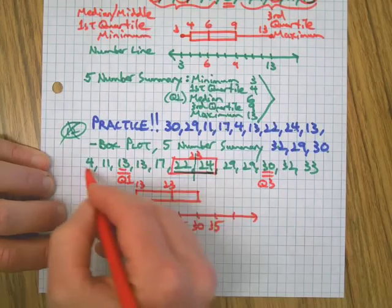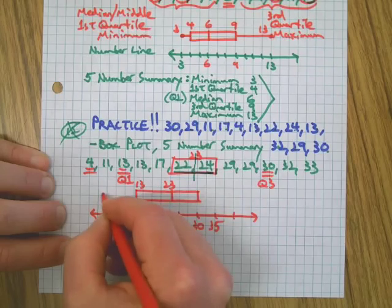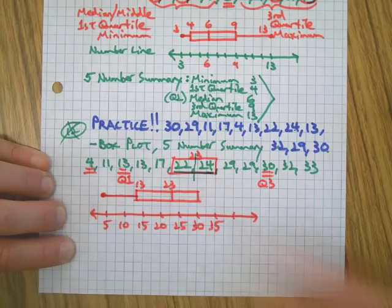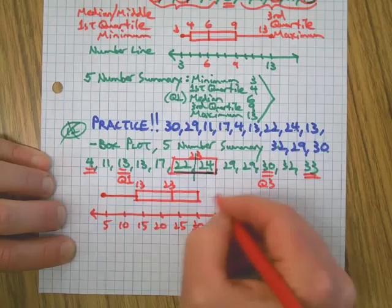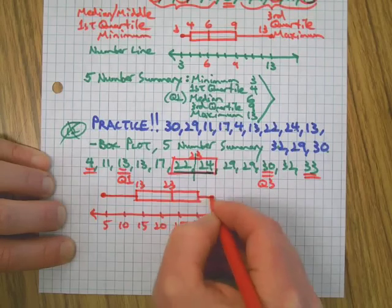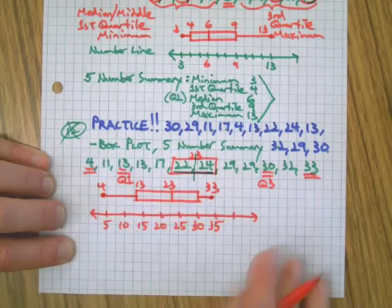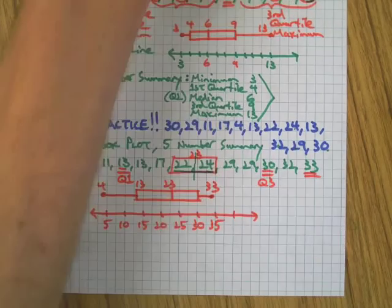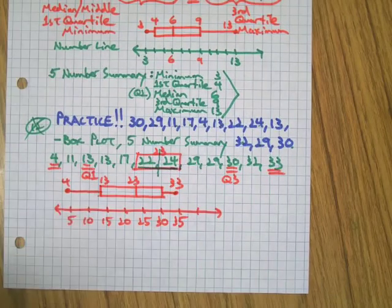Then what do we need? Right, the minimum of 4 with a dot. Connect that whisker there. Then we need the maximum, 33, with another dot.